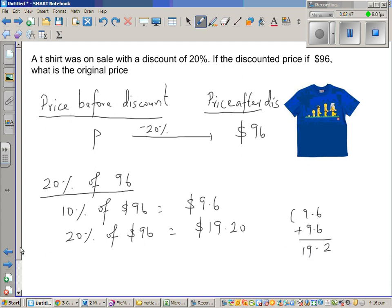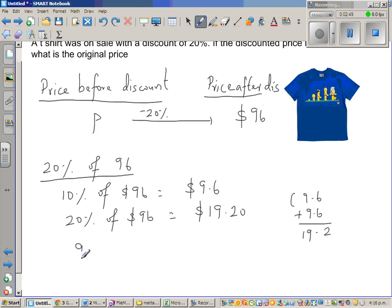And then if I add 96 plus 19.2, so let us add that. So 96.0 plus 19.2, you have to line up the decimals, 9 plus 6 is 15, carry 1 is 11. So we say okay the price was $115.20.